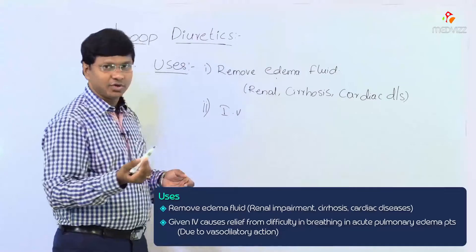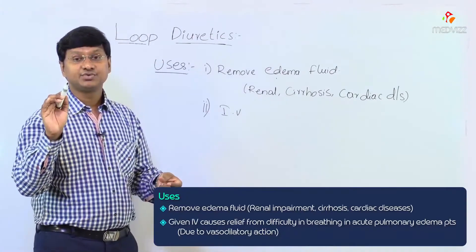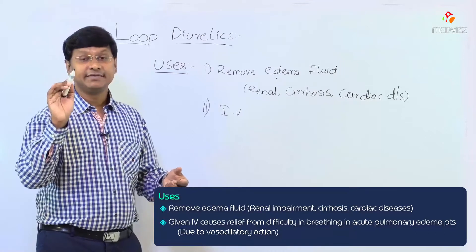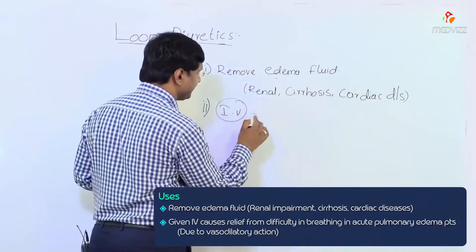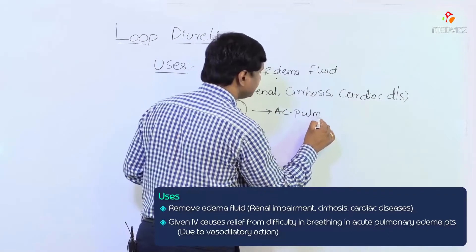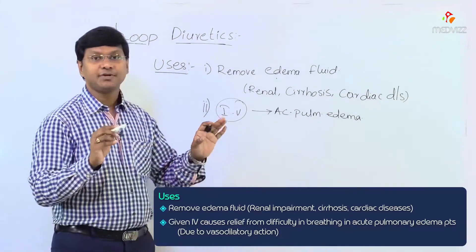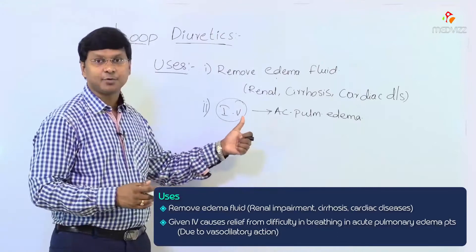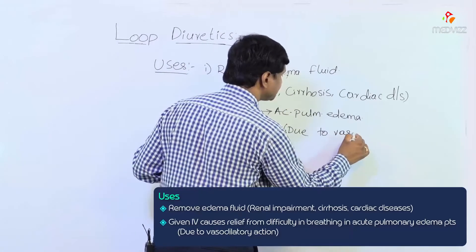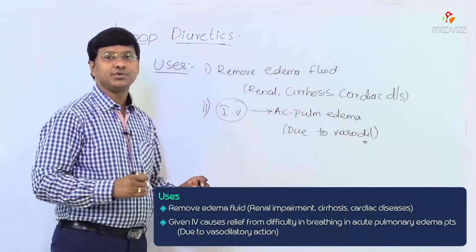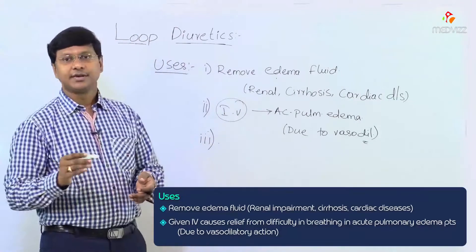These drugs can be given intravenously or orally. The advantage of giving them intravenously is that in patients with acute pulmonary edema, there will be a prompt relief of difficulty in breathing. This prompt relief of symptoms is mainly due to the vasodilatory action of the loop diuretics.